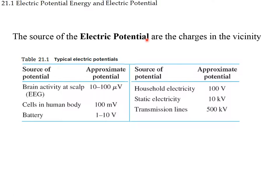There are many sources of electric potential. Brain activity on the scalp is in the microvolt range. Cells in the human body operate at hundreds of millivolts. Common batteries range from 1.5 to 9 volts. Household electricity is 120 volts. Static electricity from walking on a carpet is about 10,000 volts. Transmission lines that carry electricity to our homes can operate at up to 500,000 volts.